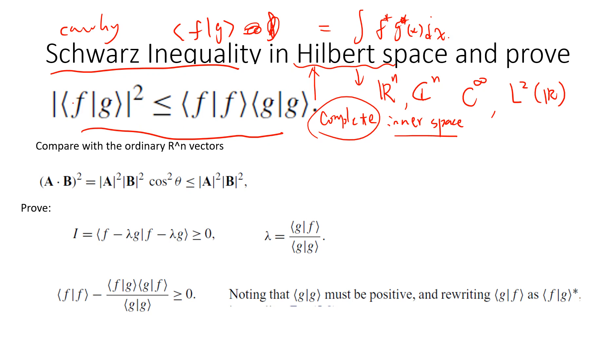Okay. So the result is that we have f and g. If you do inner product and then you do the square, then you will become, then you will less than f, the norm of f and the norm of g.